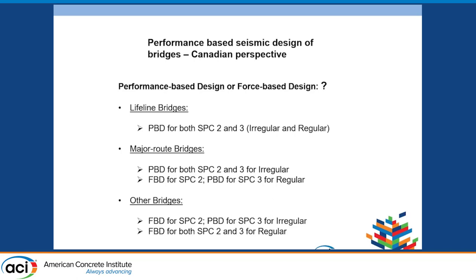Moving on to major route bridges: SPC2 and SPC3 with an irregular bridge means a fairly important bridge type, and if you have that irregularity with high seismic risk, you're going to have to do performance-based design. For SPC2 with a regular bridge on a major route, you can do force-based design. But when you go to SPC3, even if it is regular for a major route, you're going to have to do performance-based design.